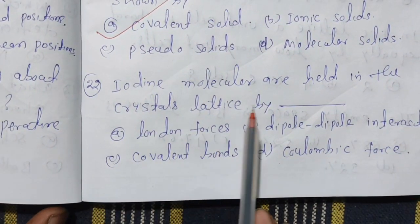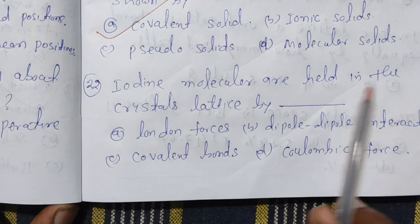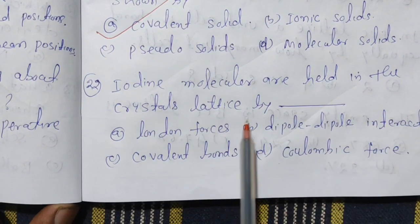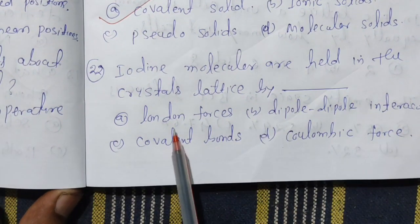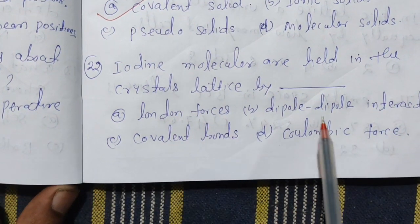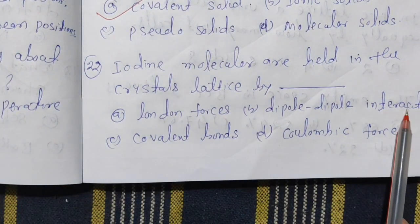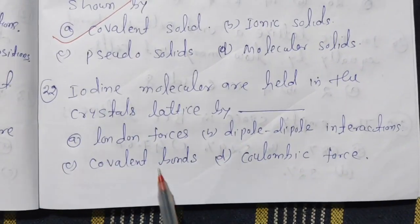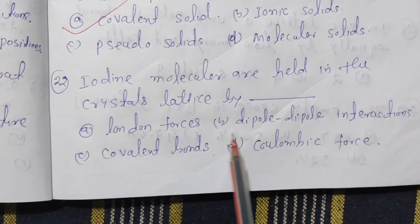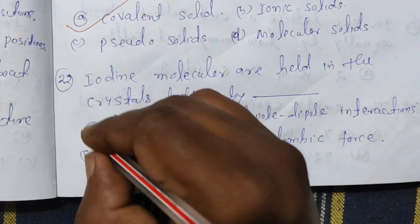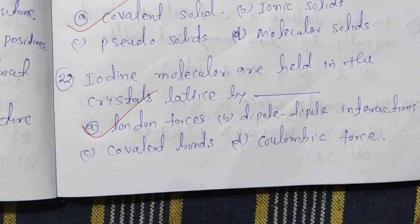Ionic molecules are held in the crystal lattice by which force — London force, dipole-dipole interaction, covalent force, or Coulomb force? The answer is option A.